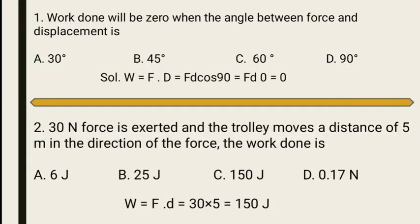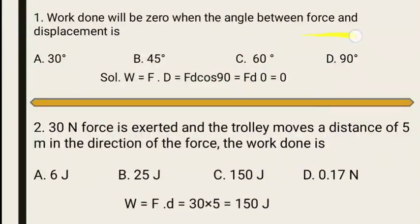The first MCQ statement is: work done will be zero when the angle between force and displacement is which value? Option A is 30°, Option B is 45°, Option C is 60°, and Option D is 90°.